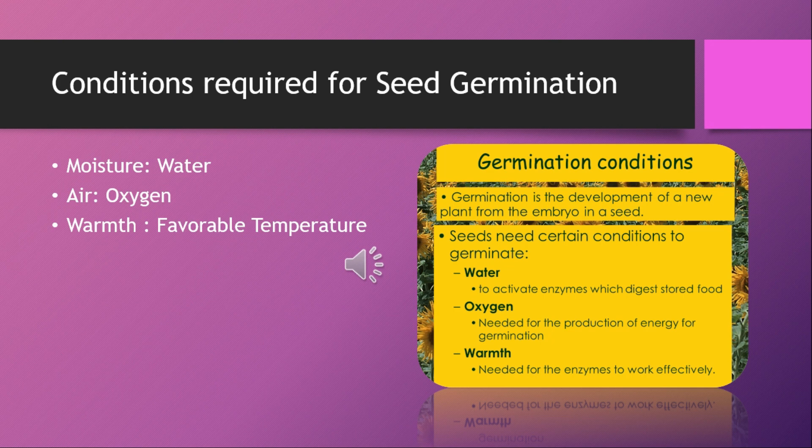We have now completed the second chapter on the flower. Read this chapter twice, underline the places you have not understood, learn the terms, and know the key terms given in the chapter.